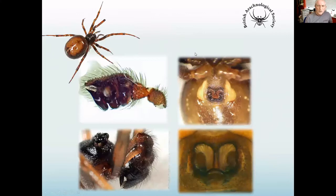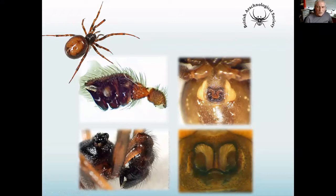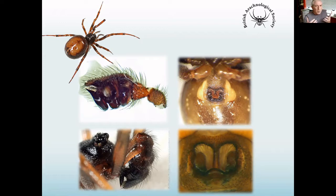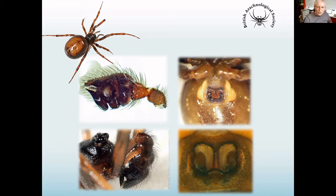Here's a species common around houses — Steatoda bipunctata, one of the native false widows. The male, relative to its body size, has absolutely huge palps, and there's a corresponding epigyne on the underside of the female's abdomen. The palp fits into the epigyne — it's often likened to a lock and key. This stops hybridisation between species and promotes speciation. Even where you have very similar species that look identical to the eye, you can often separate them under a microscope by looking at the sexual organs. But today we're talking about what you can do in the field.